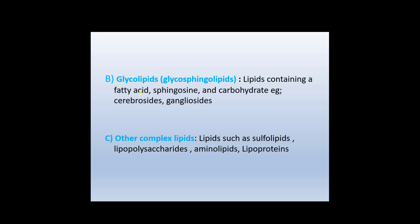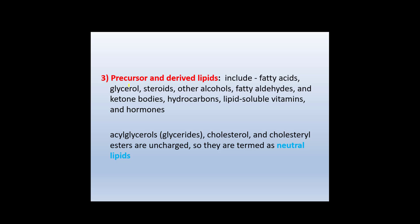Glycolipids, also called glycosphingolipids, contain fatty acid, sphingosine, and carbohydrate — examples include cerebrosides and gangliosides. Other complex lipids include sulfolipids, lipopolysaccharides, aminolipids, and lipoproteins. Precursors and derived lipids include fatty acids, glycerol, steroids, other alcohols, fatty aldehydes, ketone bodies, hydrocarbons, vitamins, and hormones. Acylglycerols and cholesterol carry no charge and are termed neutral lipids.